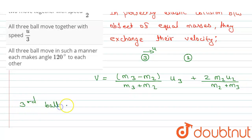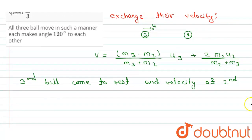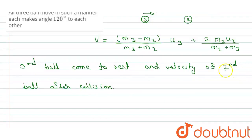And velocity of second ball after collision, the velocity of second ball is, let's suppose v dash is equal to m2 minus m3 divided by m2 plus m3 into u2 plus 2 times m3 u3 divided by m2 plus m3. So these velocities are the expression for the elastic collision.